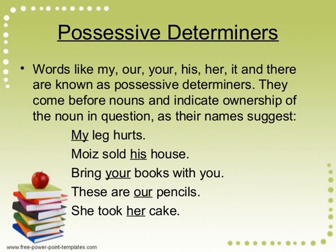Possessive determiners are actually possessive adjectives. The word 'possessive' implies ownership. Words like my, your, his, her, its, and their are known as possessive determiners. They come before nouns and indicate ownership of the noun. When they come before a noun they are qualifying the noun, so they are also called possessive adjectives. For example, 'my leg hurts' or 'bring your books with you' — such words emphasize the ownership of that particular noun.